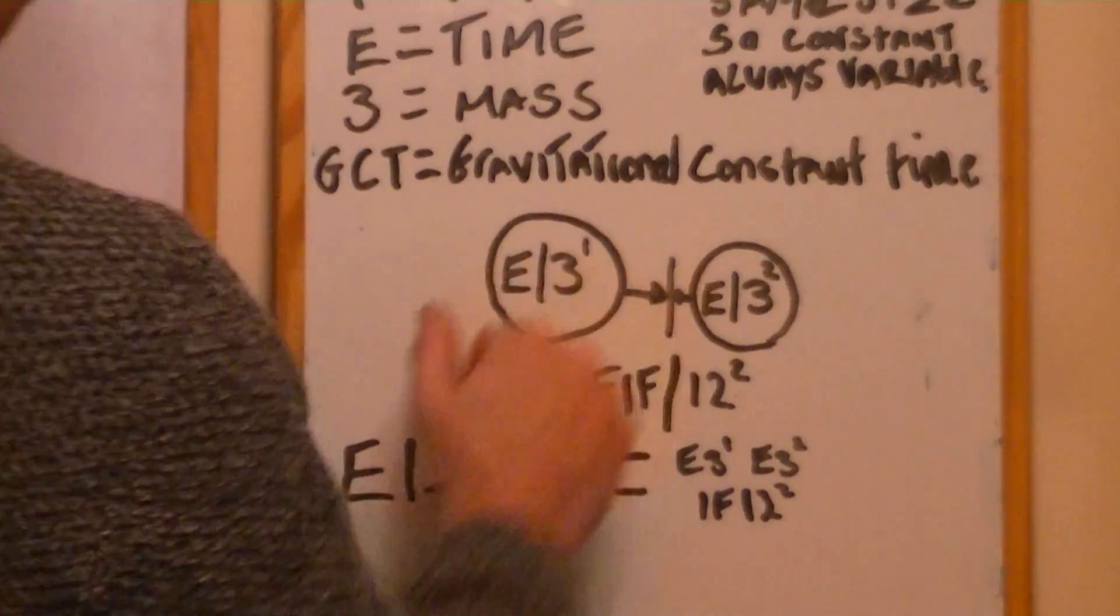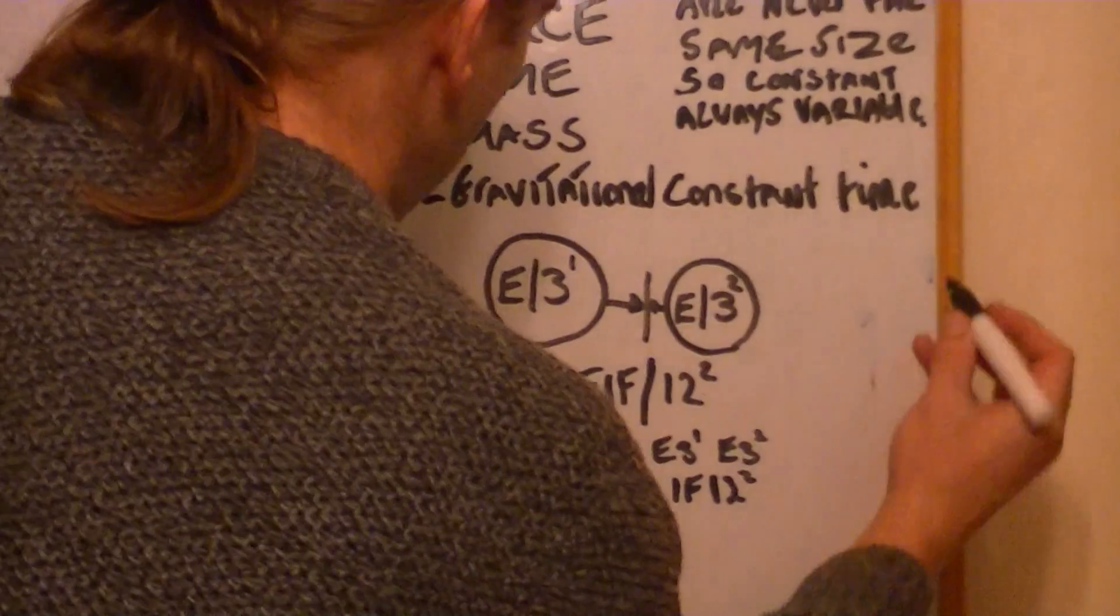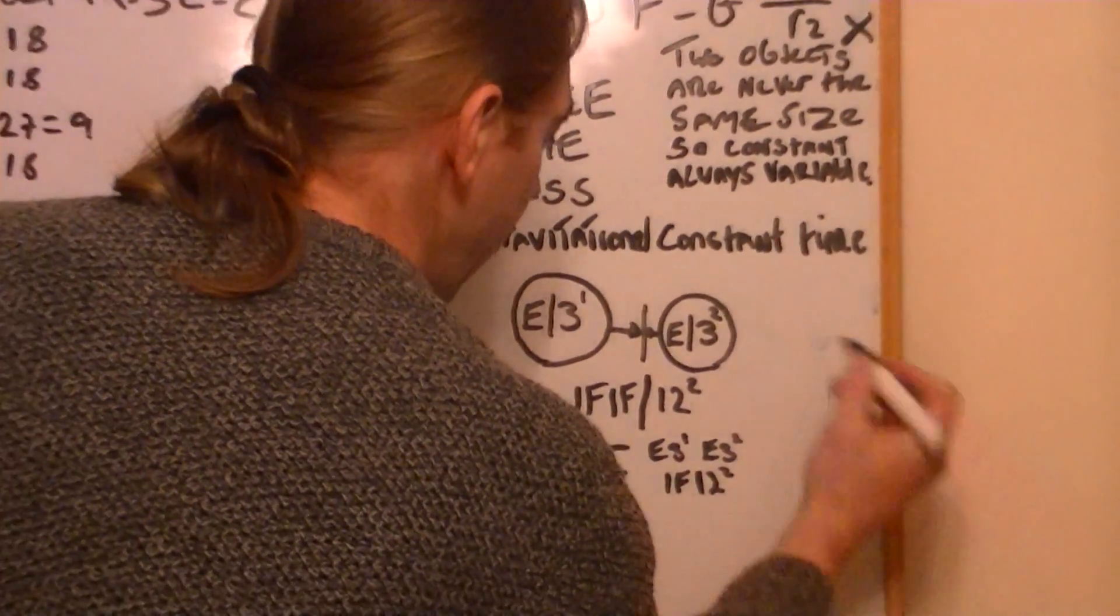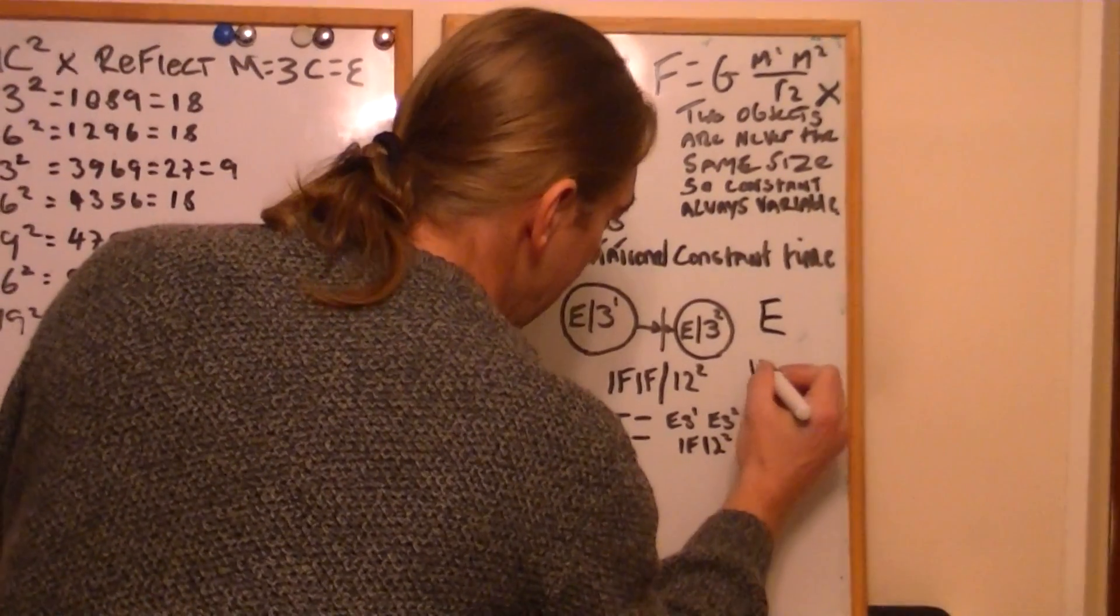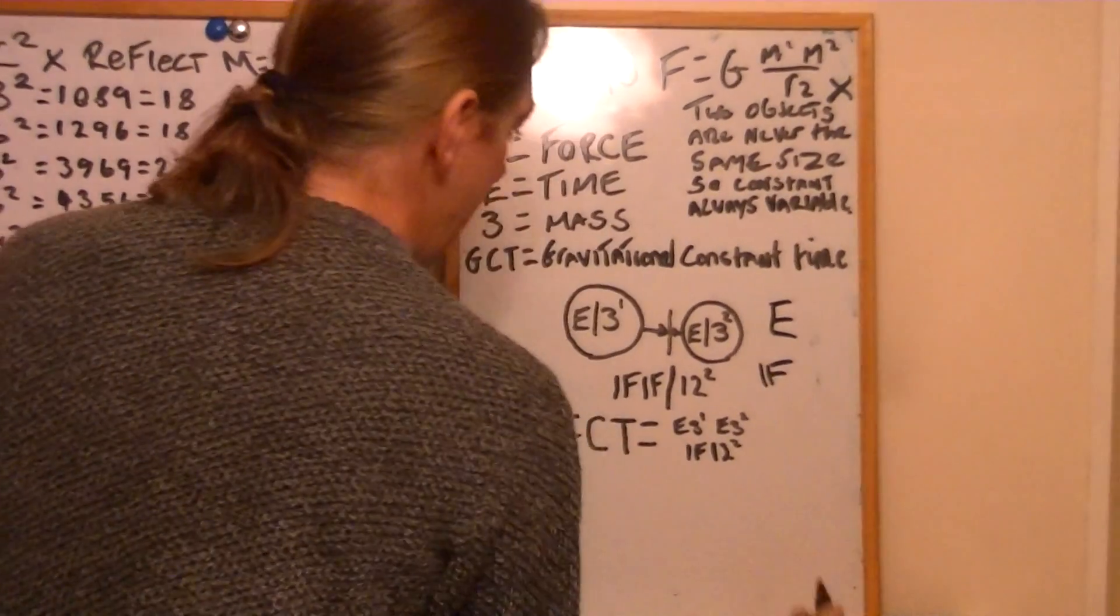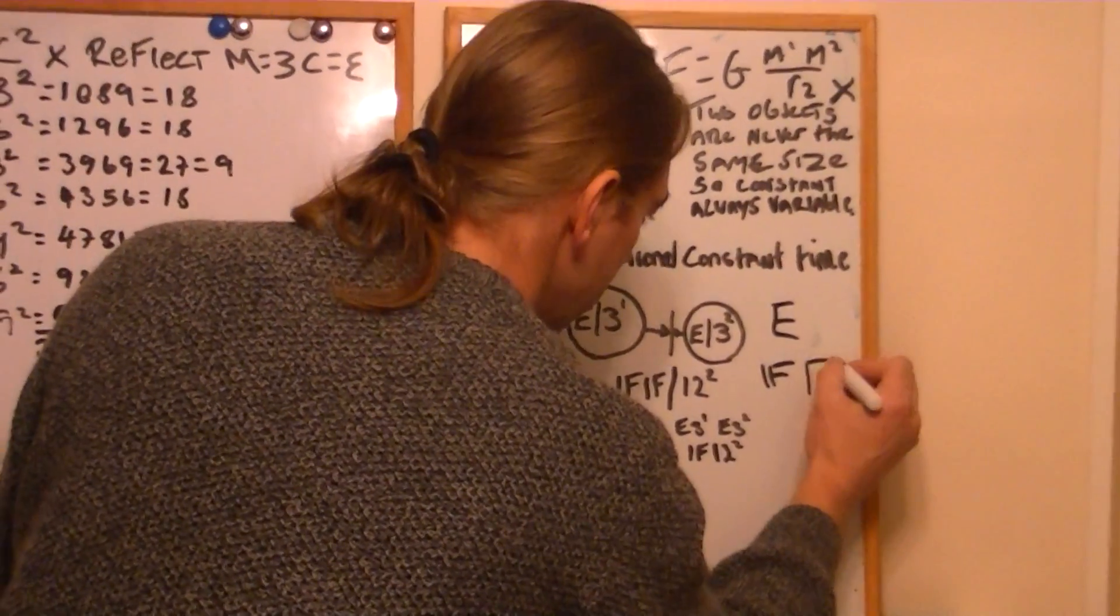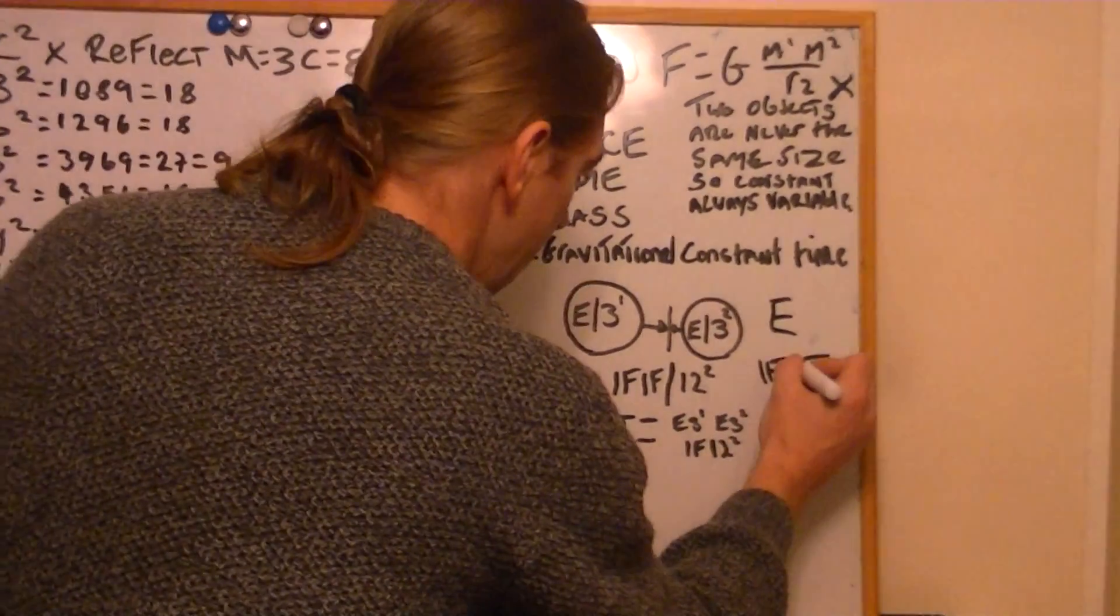E, E. How did you get if, if from E, E? I'll show you. In reflection, there's an E. All you do is remove the bottom leg and you get if. Now, we've got two of those, hence why it's if, if.